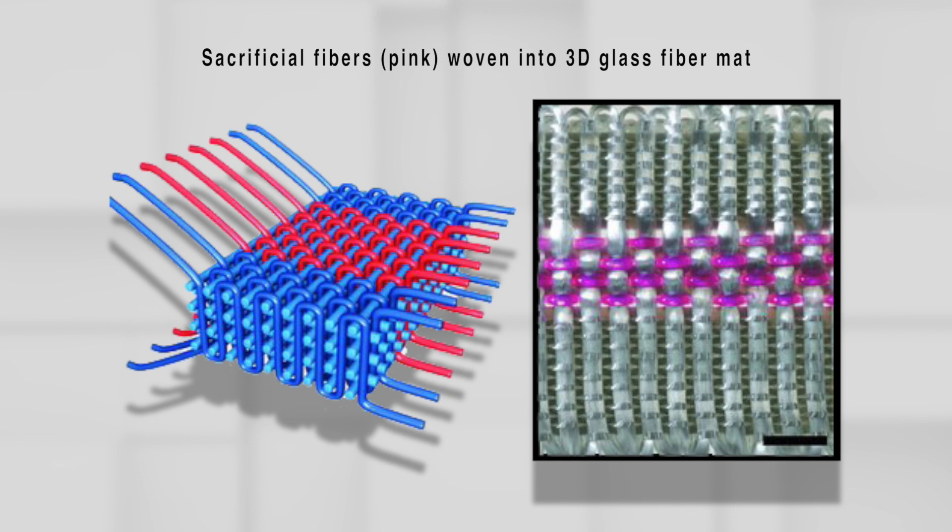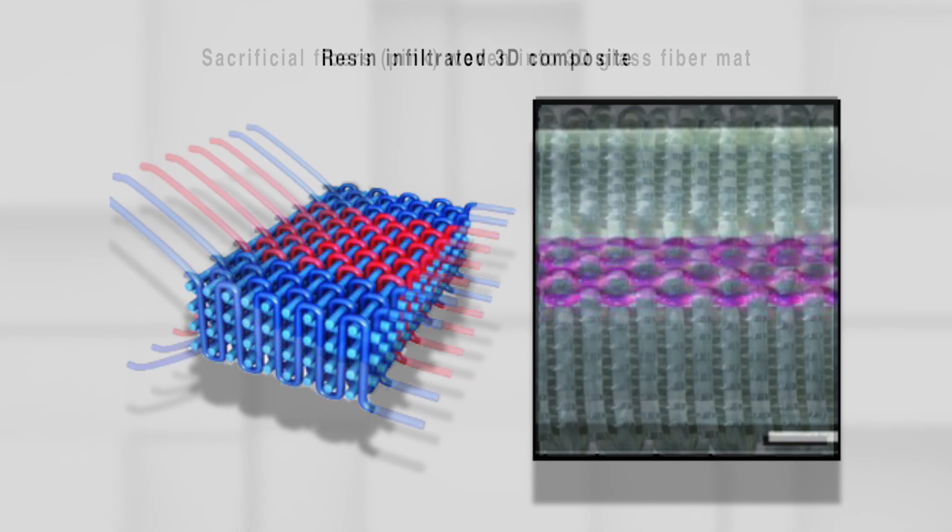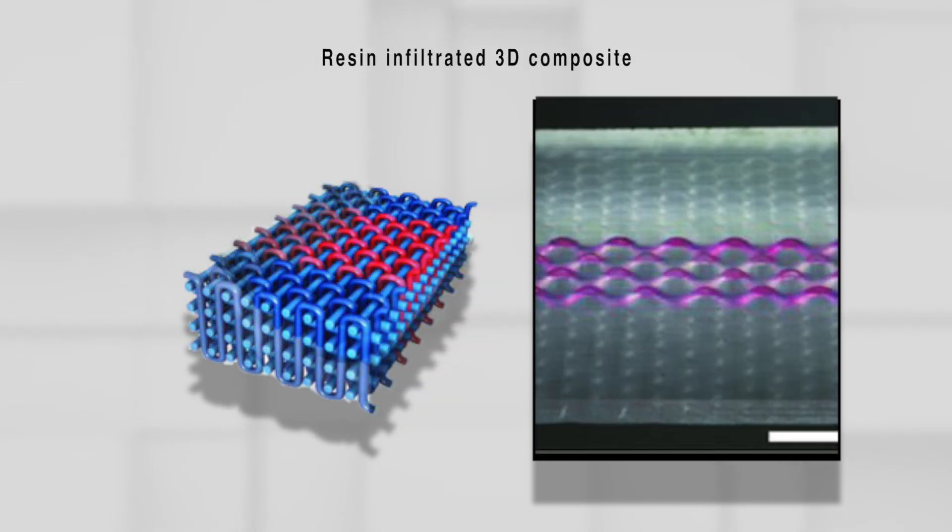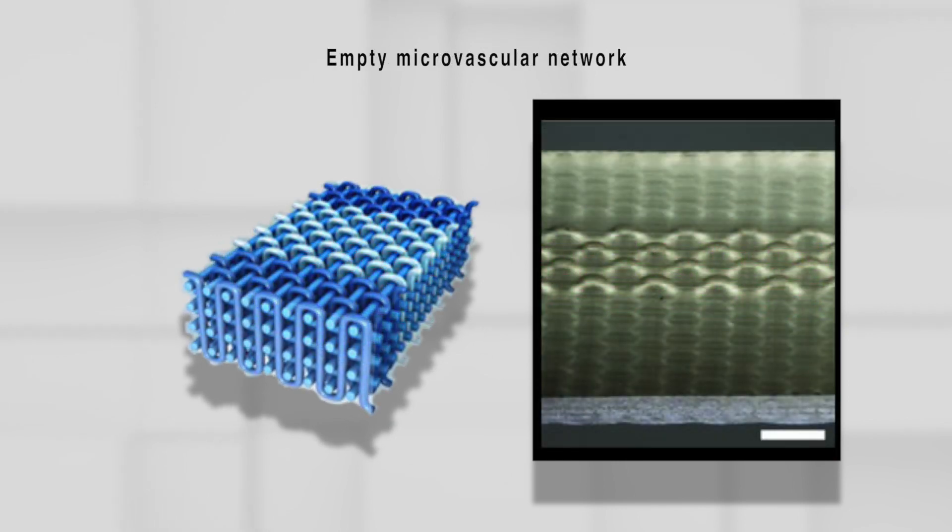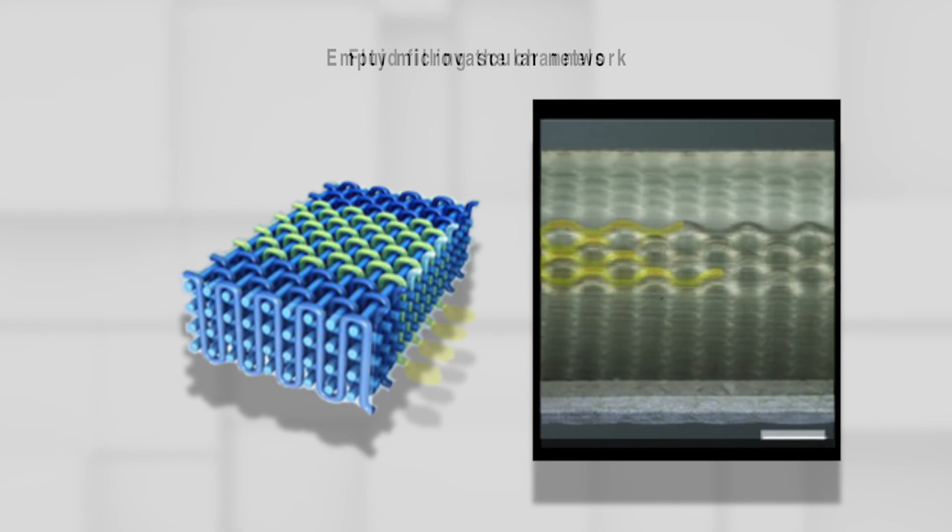The key development is fiber that is sacrificial in nature. Basically, we can weave it into a composite, then we can cure the composite and depolymerize the sacrificial fiber, and it leaves behind a channel where the fiber was.